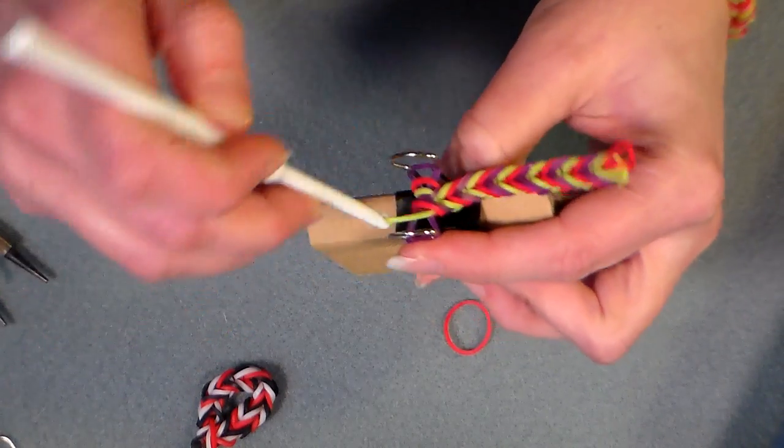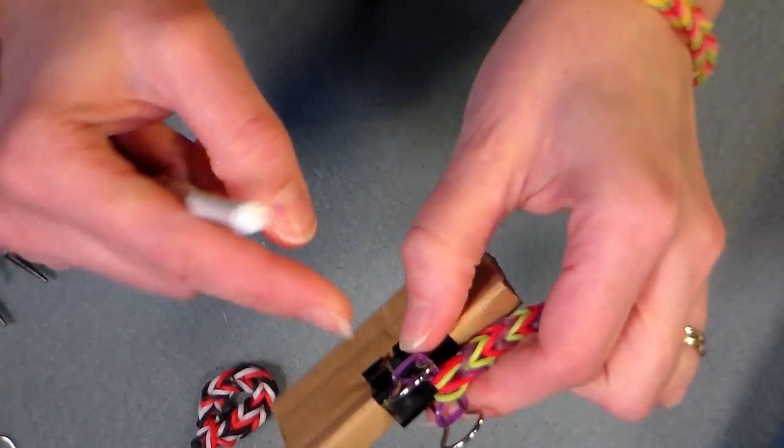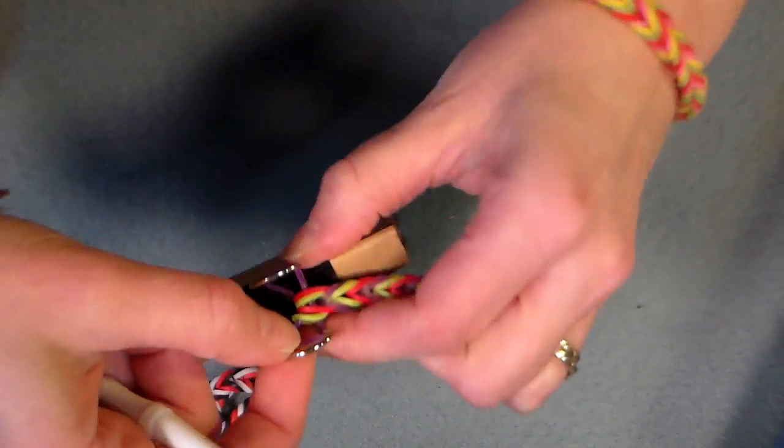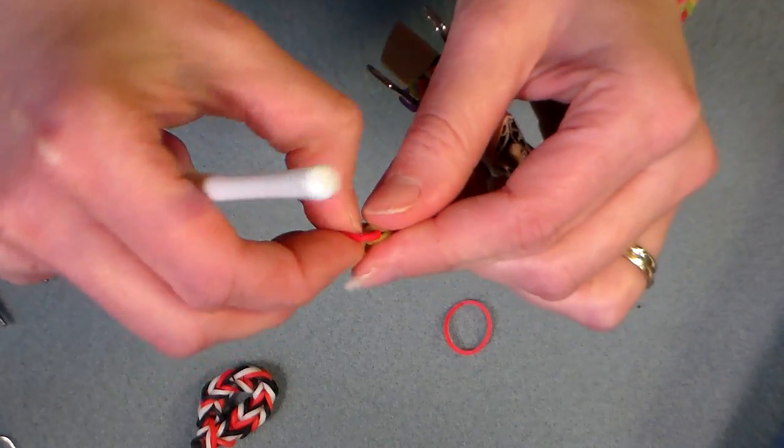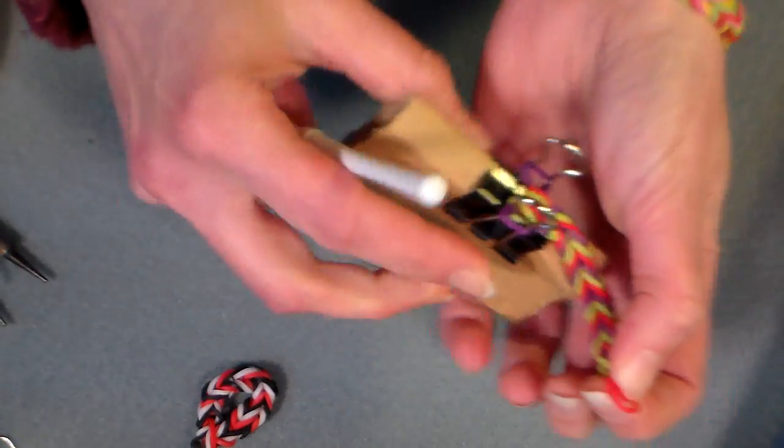And then if you're going to make this a bracelet, just grab your C clip or S clip, and just pick up each of those ends with the S clip, and then pick up your starting ends with the other side of the S clip or C clip. That's going to give you your bracelet.